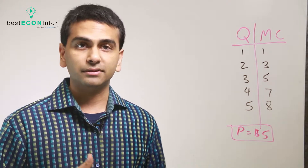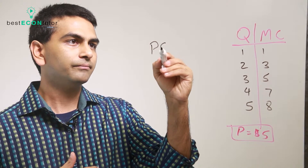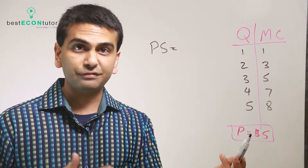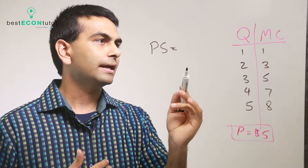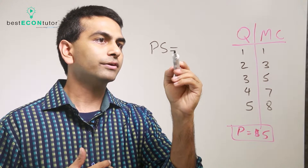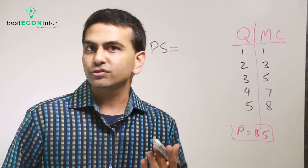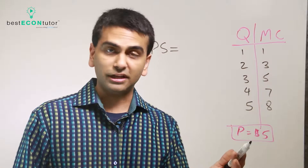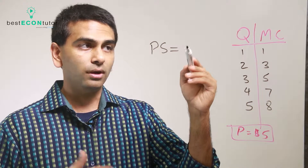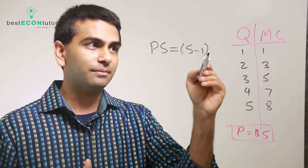One way to think about producer surplus: if you're selling this good for five dollars each and it's costing you one dollar to make the very first item, how much profit will you make? You're selling it for five and it only costs a dollar to make it — that's five minus one, a four dollar profit from that one item.